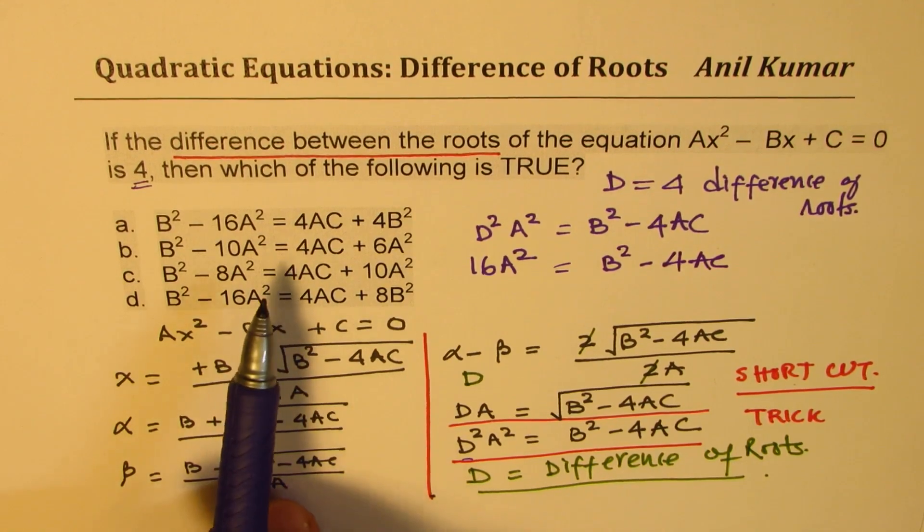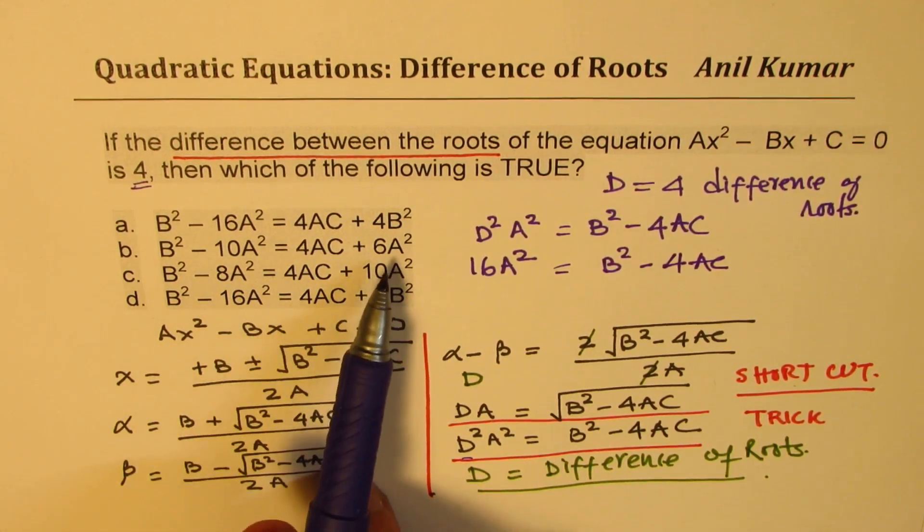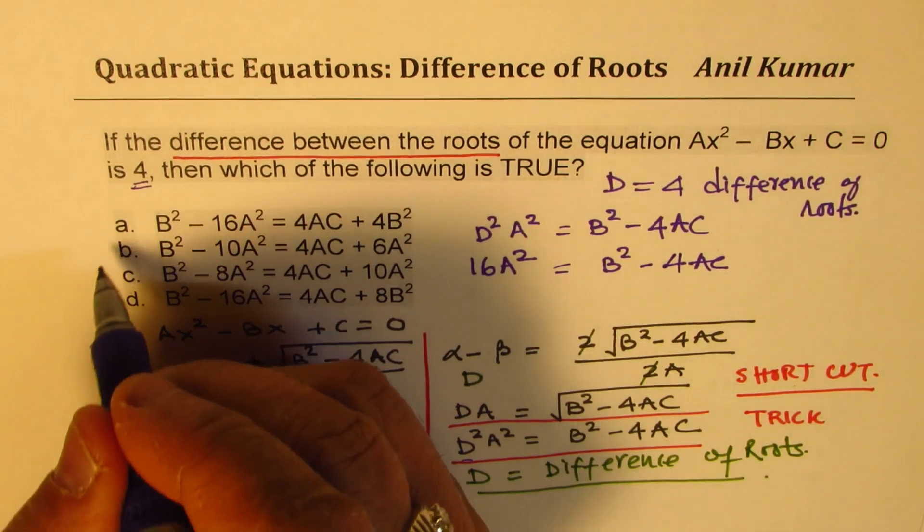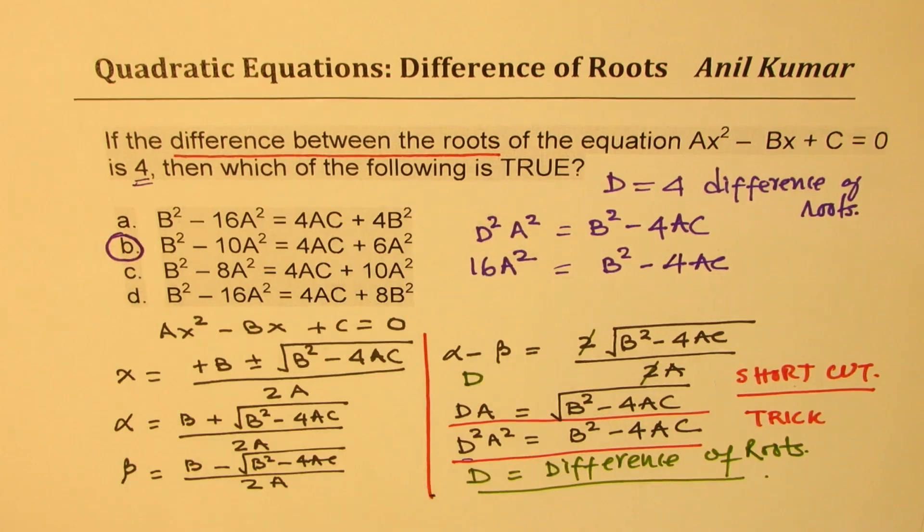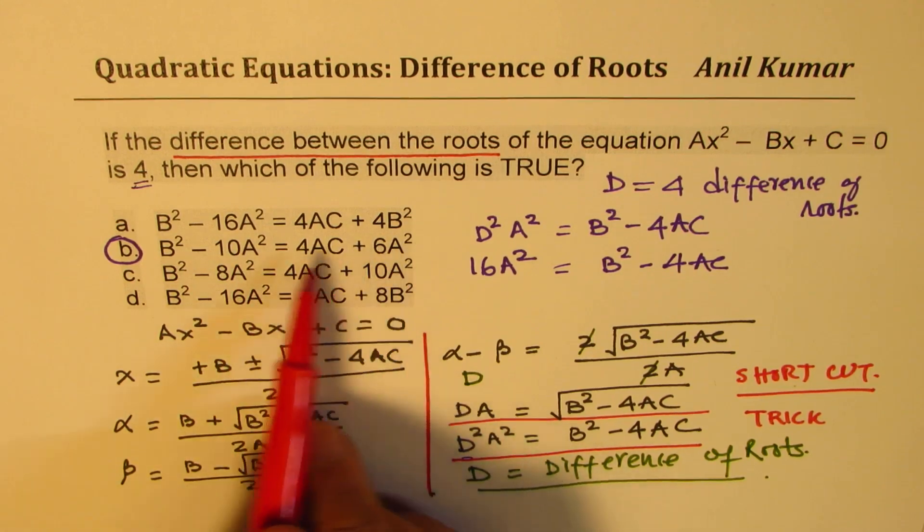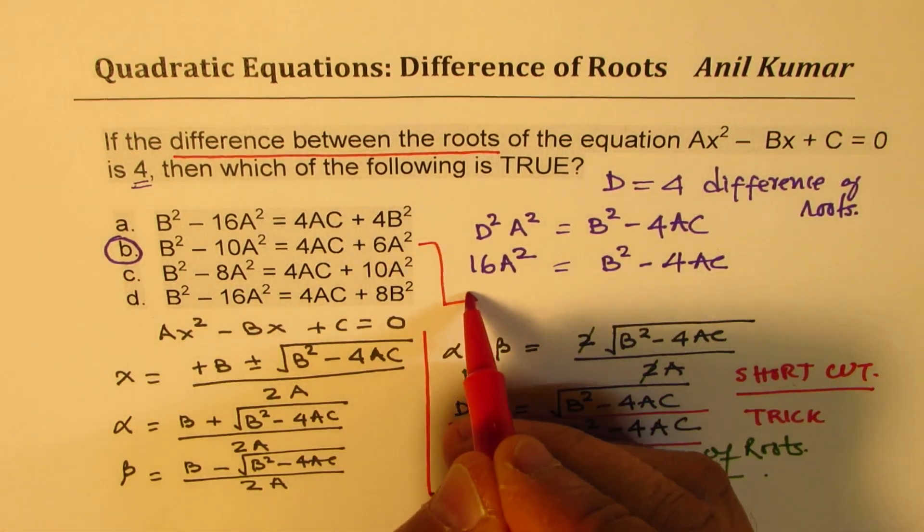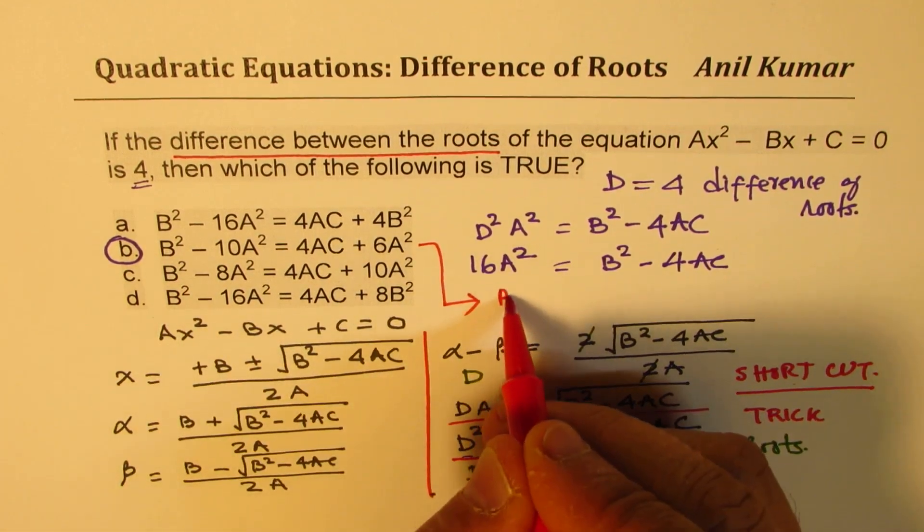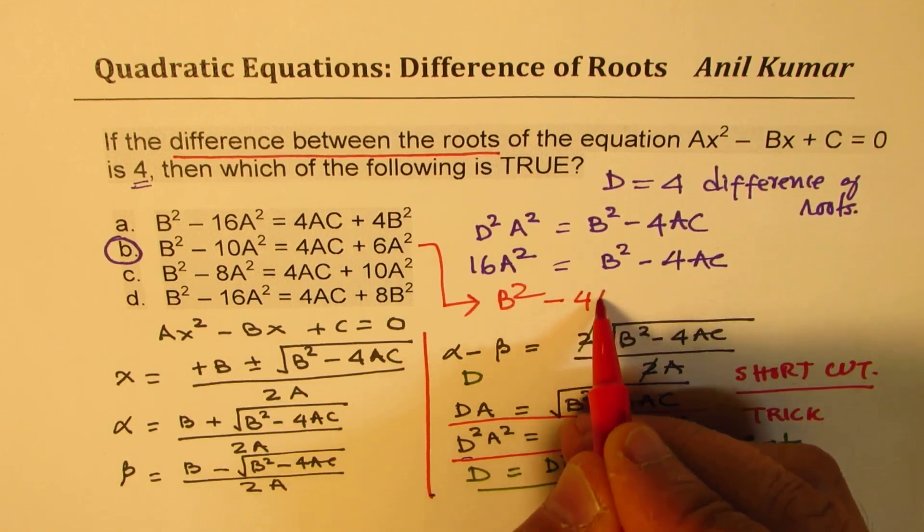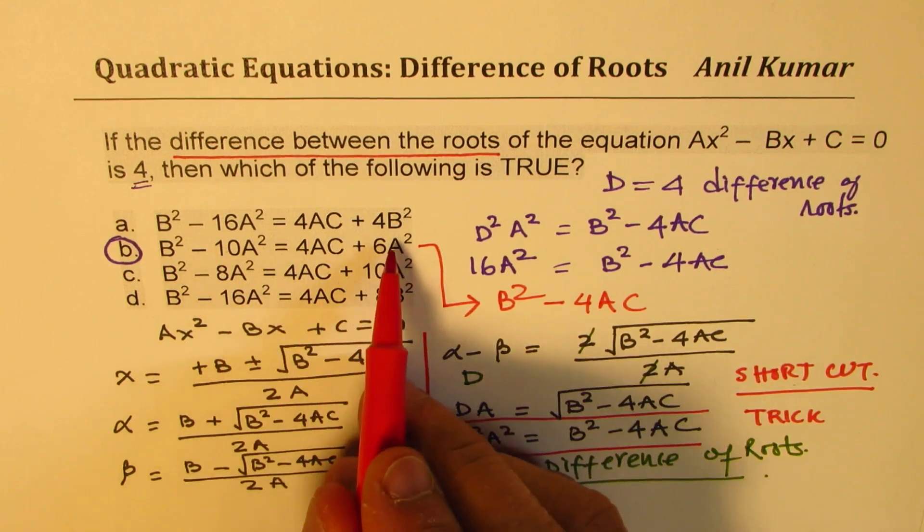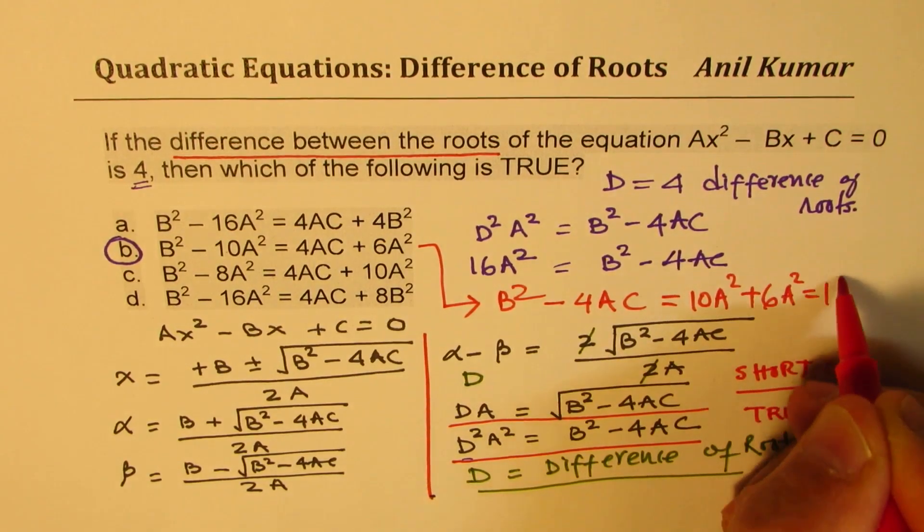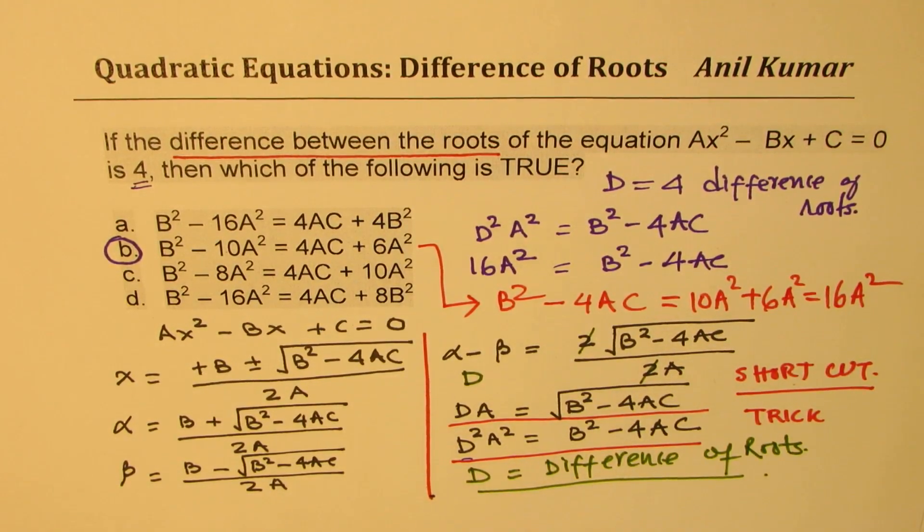And that equals b² - 4ac. In these equations, you may have to rearrange a bit to get 16a². For example, let's look at option b. If I take the 10a² to the other side, option b is basically b² - 4ac on the right. Taking 10a² to the left gives us 10a² + 6a² = 16a². Is that clear?